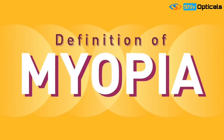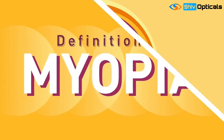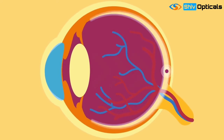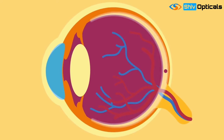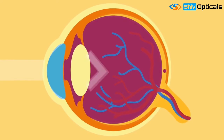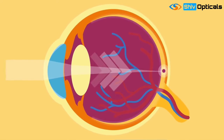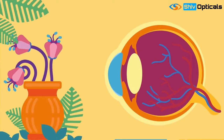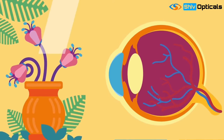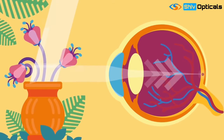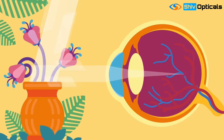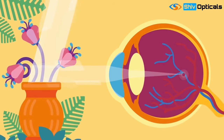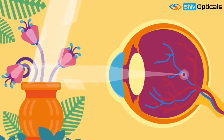Definition of myopia. It is a form of refractive error — inability to refract, bend, or focus the light rays properly — in which parallel rays of light coming from a distant object, after entering the eye, are focused in front of the retina instead of on the retina, with eye muscles at rest.